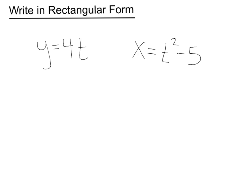I think I just confused myself, so let's just do an example. Here we want to write these two equations in rectangular form. We've got y equals 4t, and x equals t squared minus 5.